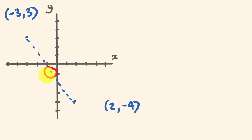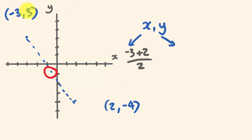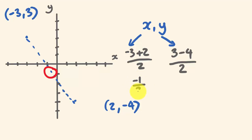We are going to work out the midway point between these. Once again, this is going to be an x, y value. The x: we have minus 3 and we have 2, so I'm going to add those two together and divide by 2. And for the y, I've got 3 and minus 4, so I'm going to add those two together — 3 plus minus 4, which is the same as 3 minus 4, over 2. So minus 3 plus 2 is minus 1 over 2, and that's our x value: minus one half. And 3 minus 4 is minus 1 over 2, which is minus one half. So our point is going to be minus one half, minus one half. That's our x, y value, and that's how you work out the midpoints.